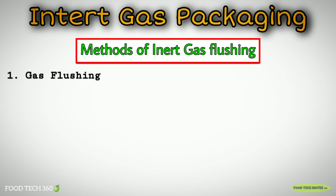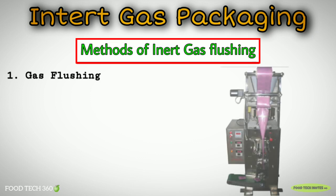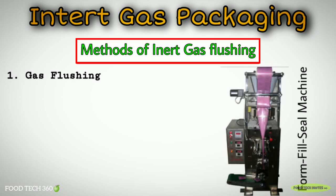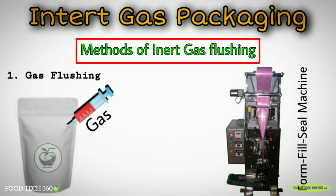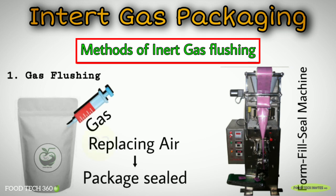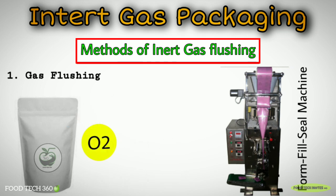Gas flushing: The gas flush process is usually performed on a form fill seal machine. A continuous stream of gas is injected into the package to replace the air by diluting the air in the headspace surrounding the food product. When most of the air has been replaced, the package is sealed. Typical residual oxygen levels in gas flushed packs are 2–5% oxygen.